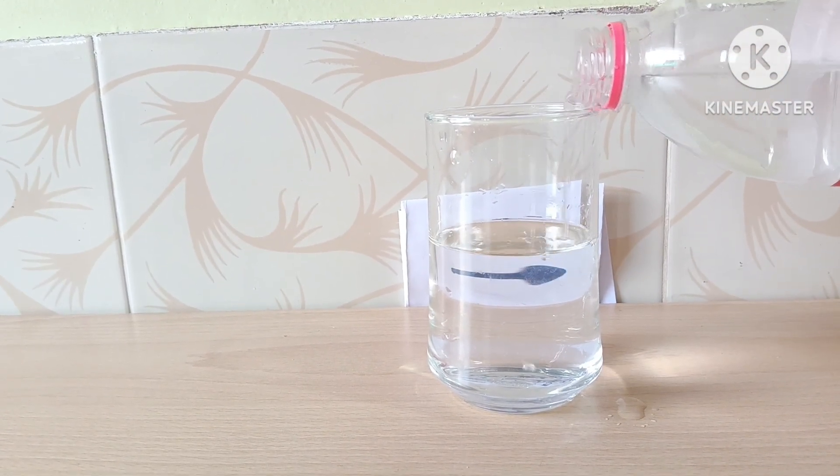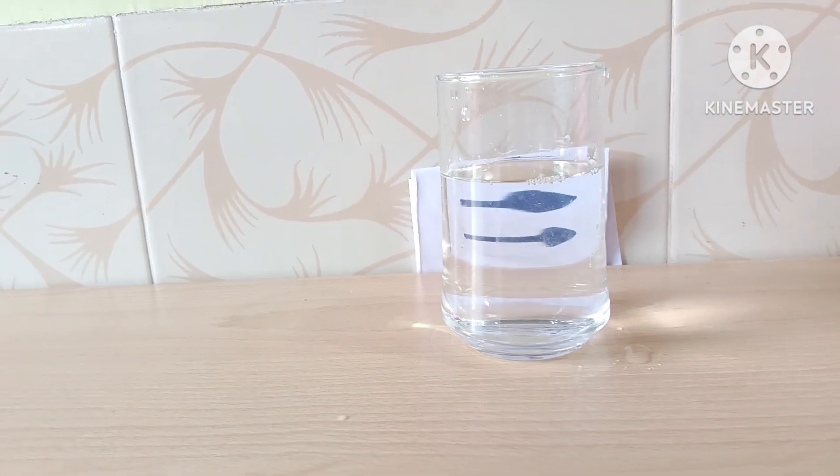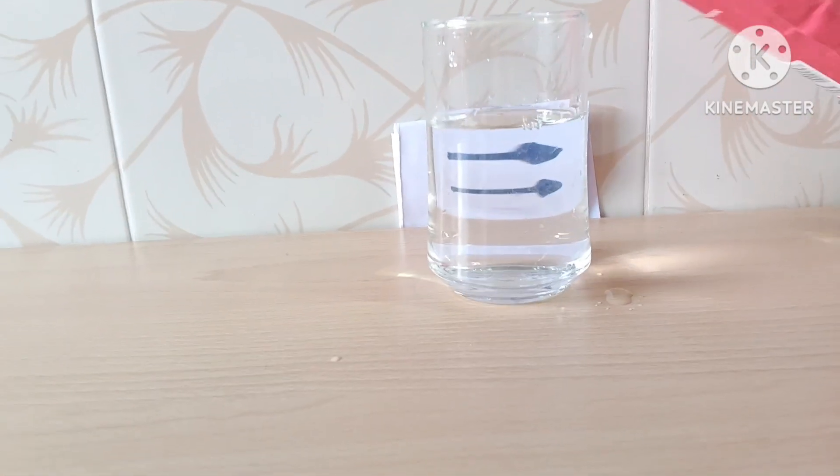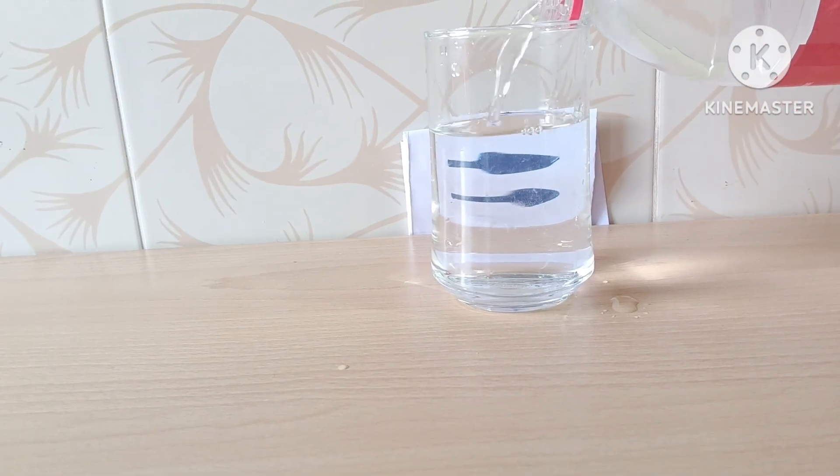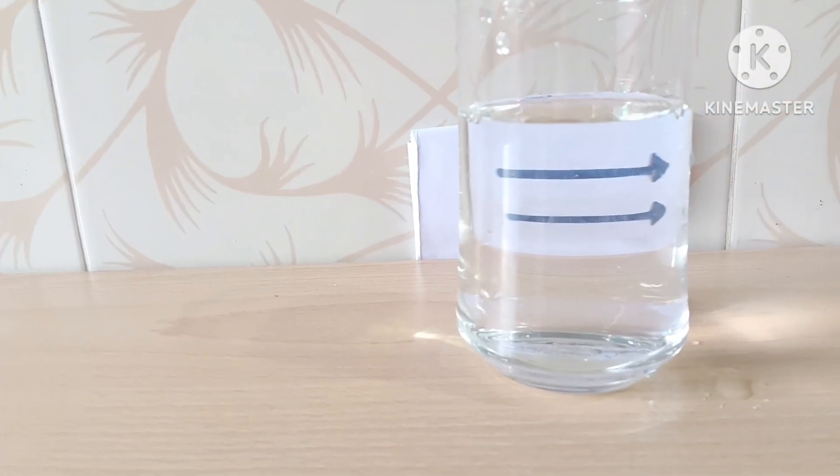Initially when the tumbler is empty, the arrows will appear as they are drawn. As you fill the tumbler with water, you will notice the direction of the arrows appears to reverse.